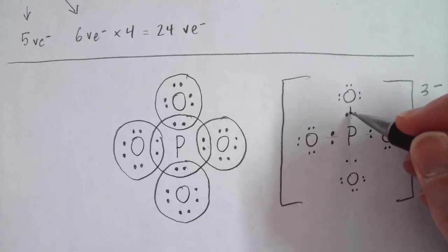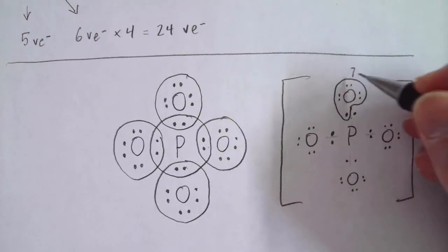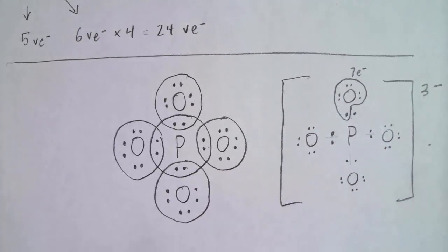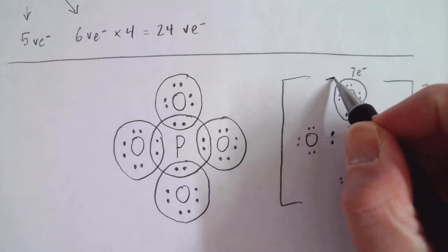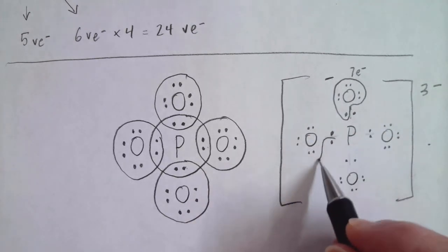So this oxygen up here, if I circle kind of the electrons it owns, would be 2, 4, 6, 7 electrons. Now, oxygen in its neutral atom would have six valence electrons. And this indicates that it has ownership over seven electrons. So it would, in fact, be carrying a minus one formal charge. And I can just write that as a minus sign. That's going to be true of the other oxygens as well.